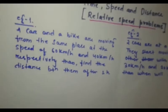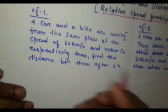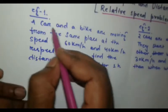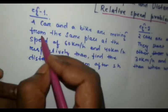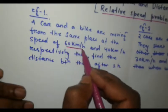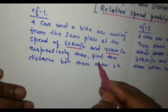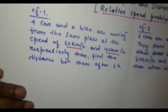I hope you can read the example. It is given that a car and a bike are moving from the same place at the speed of 60 km and 40 km per hour respectively. Then, find the distance between them after one hour.